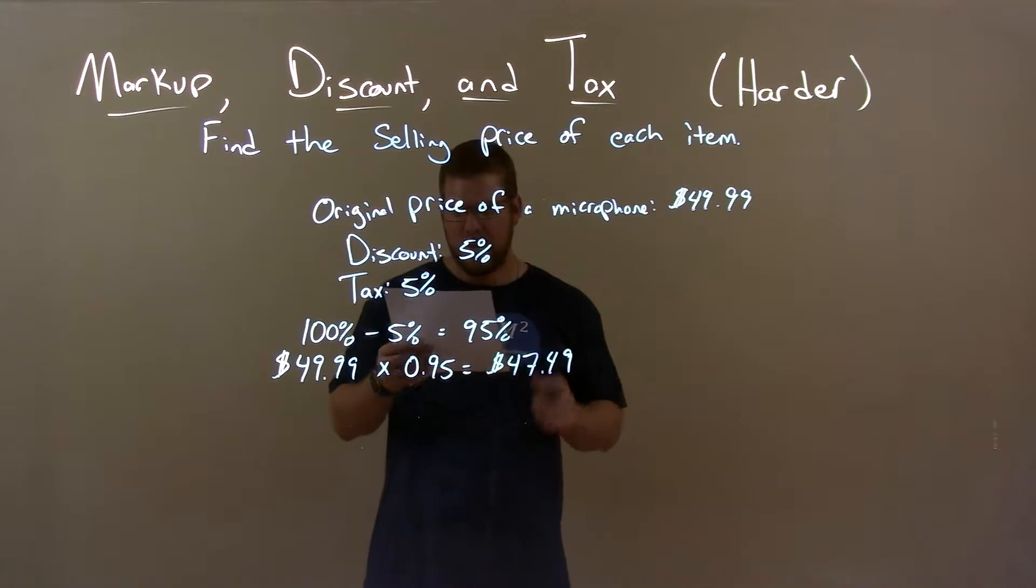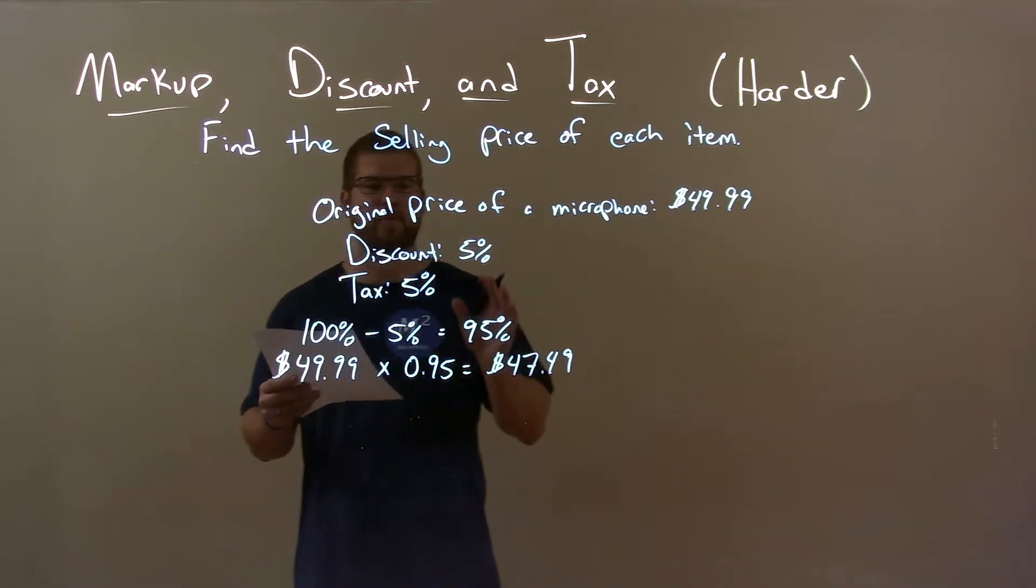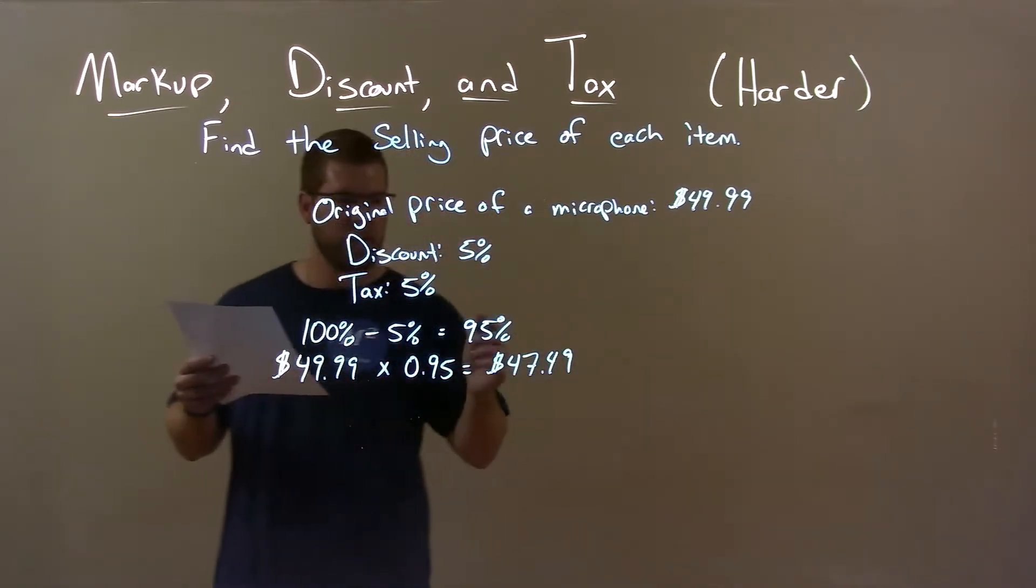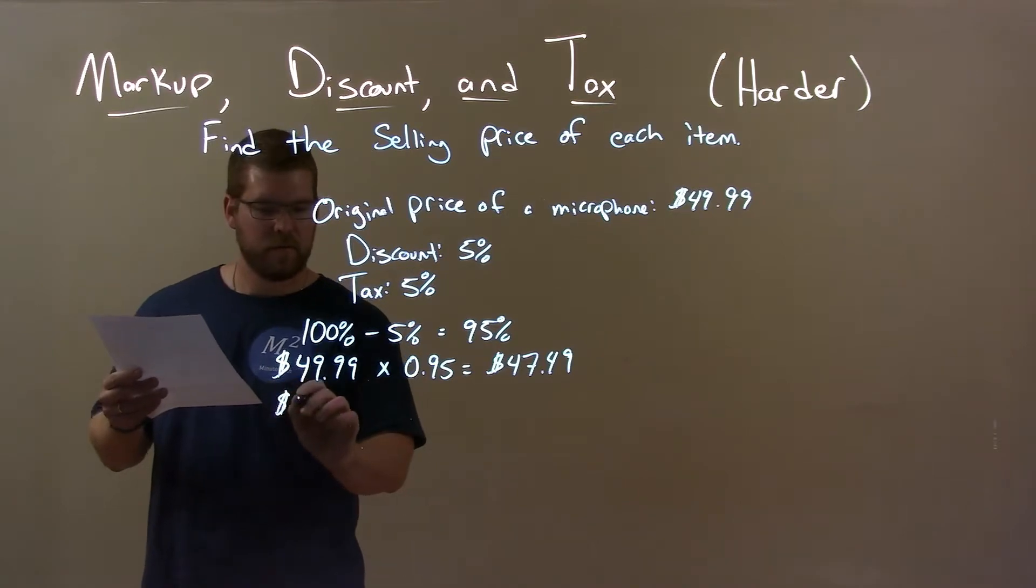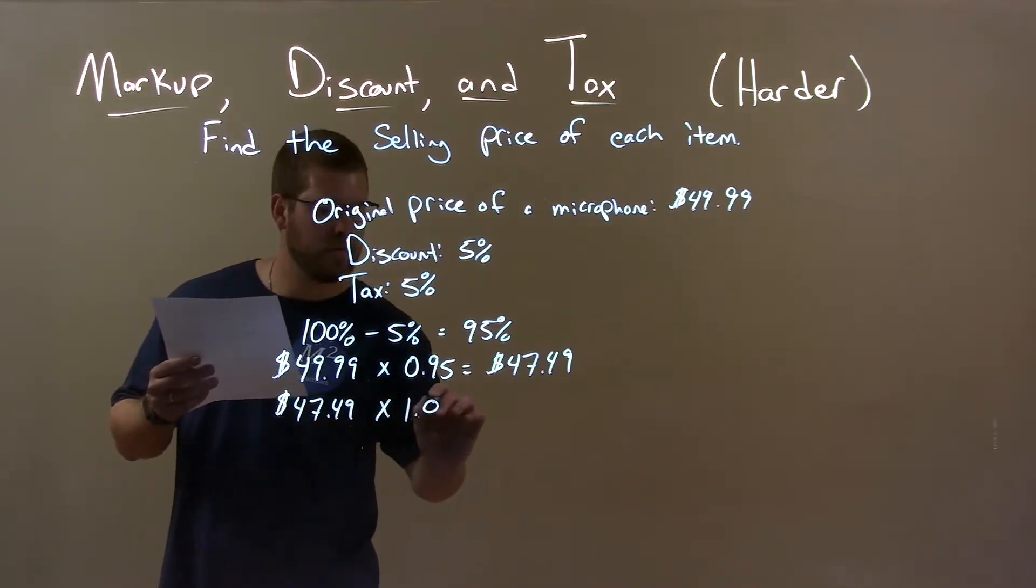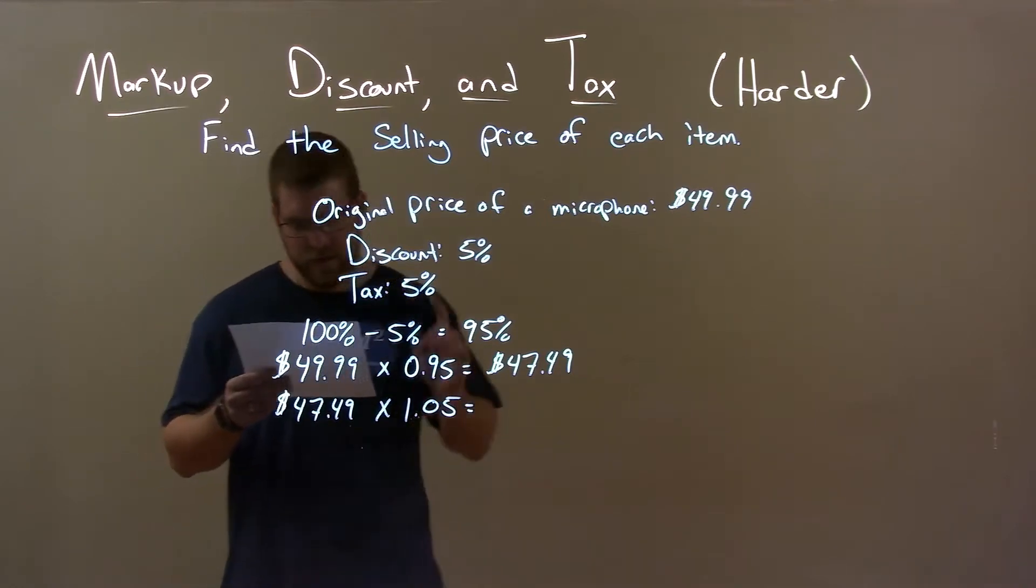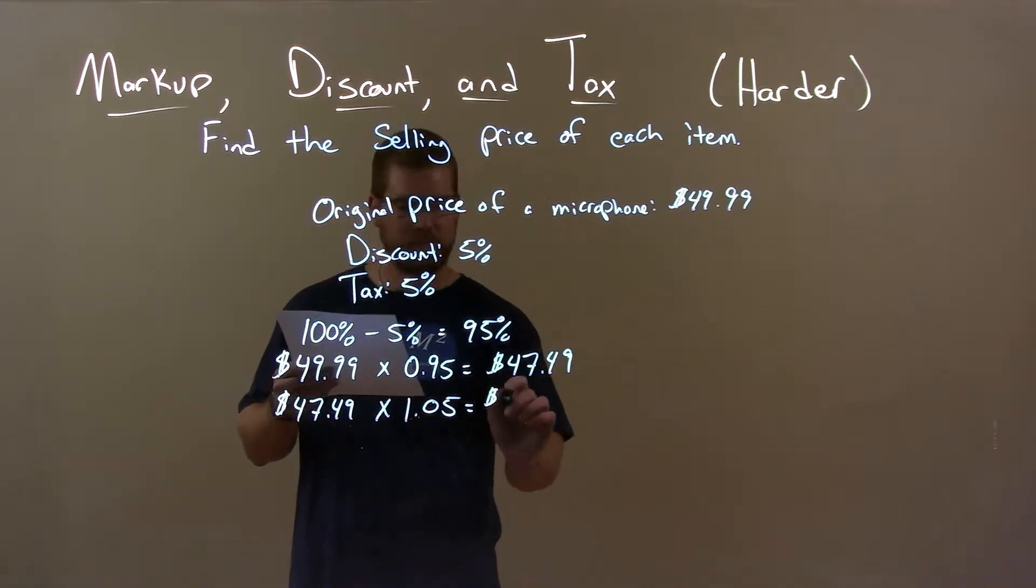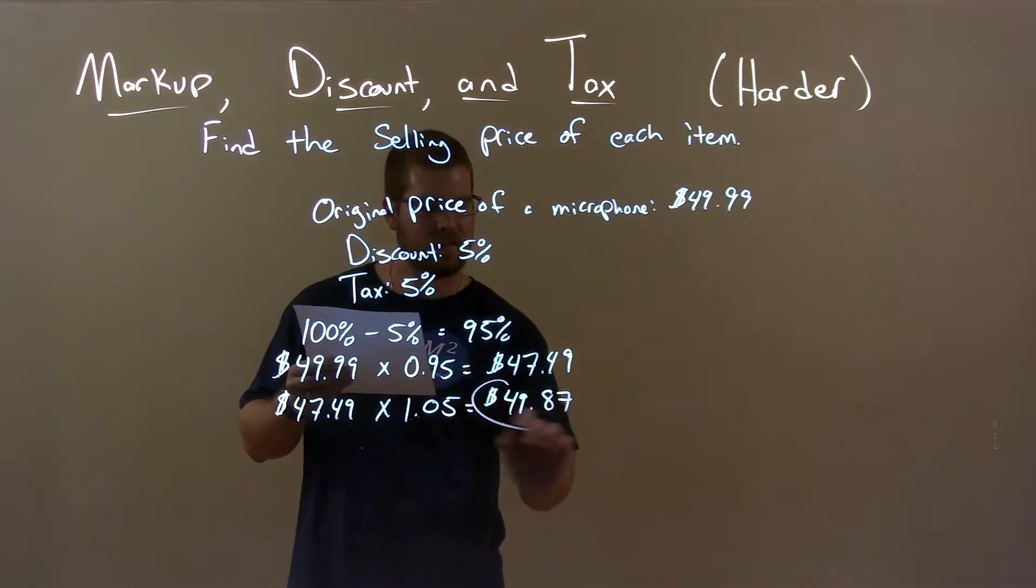And then now we're going to have a 5% tax on top of that. So we take $47.49 and multiply that by 1.05, 5% tax. This comes out to be $49.87.